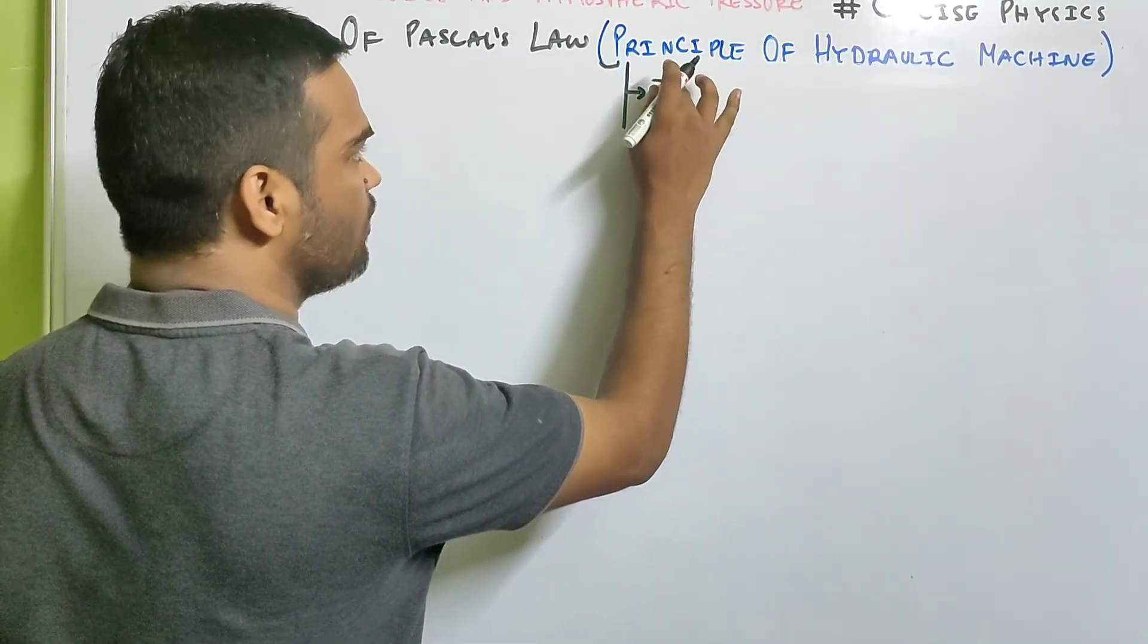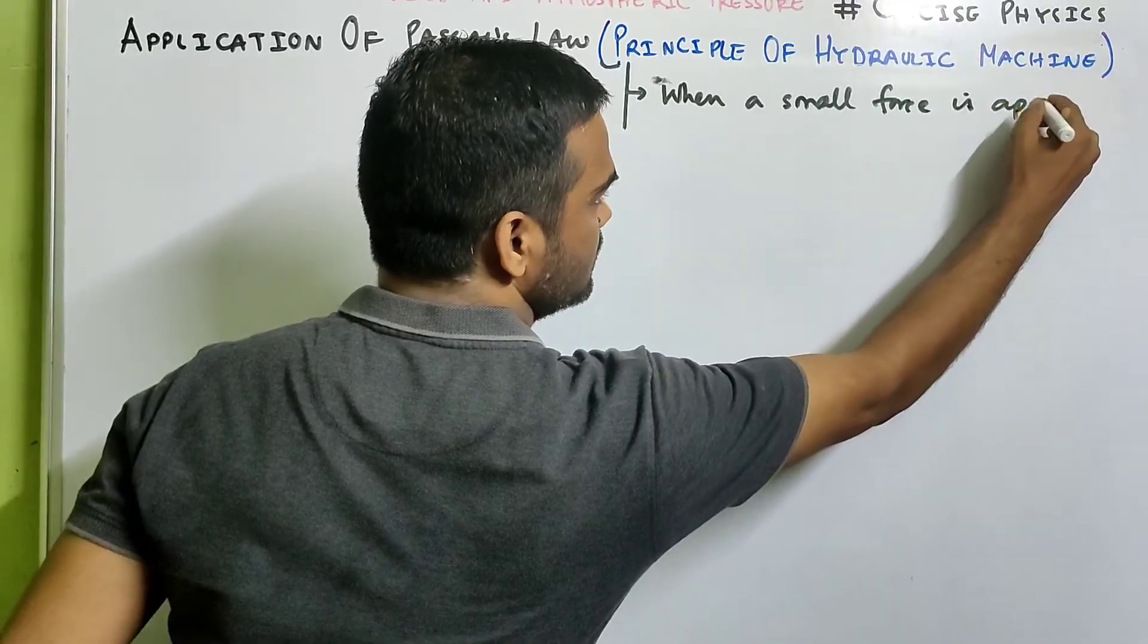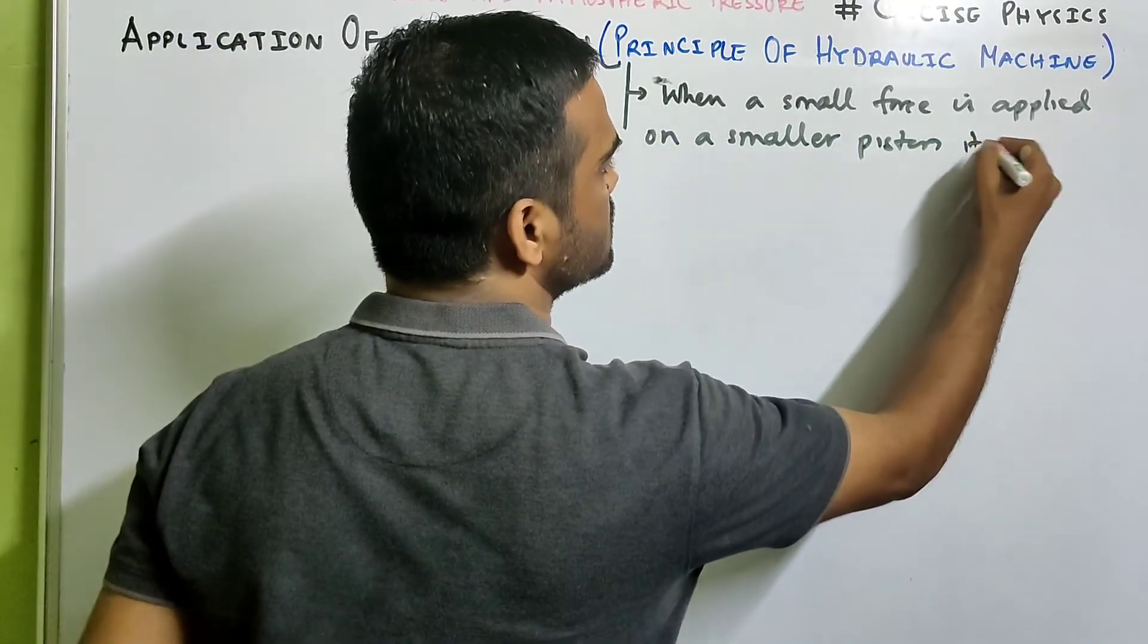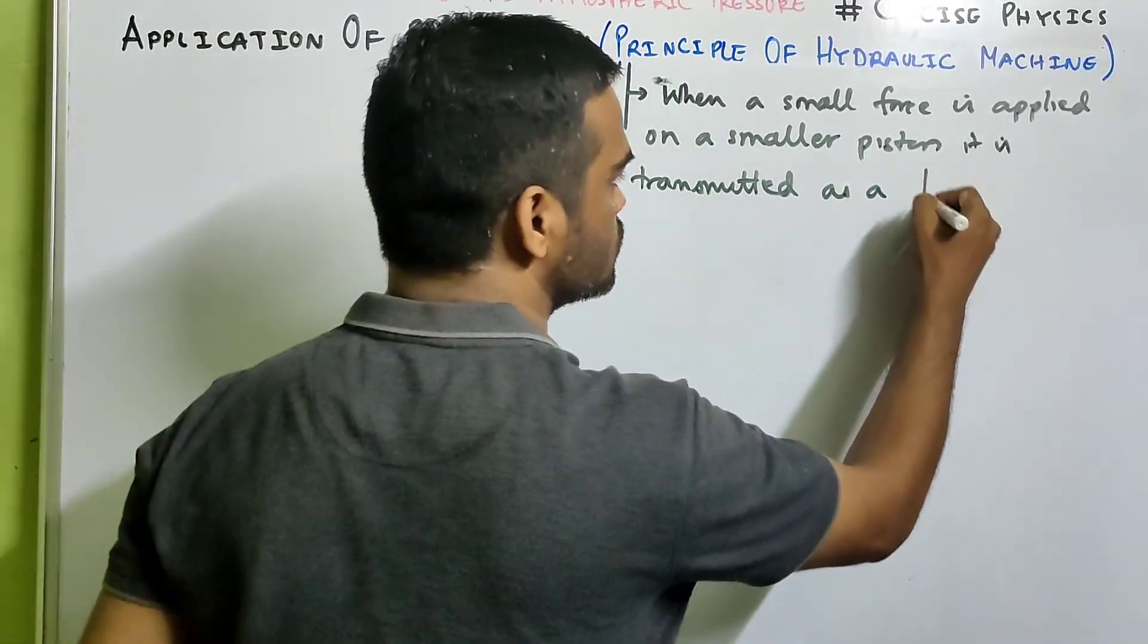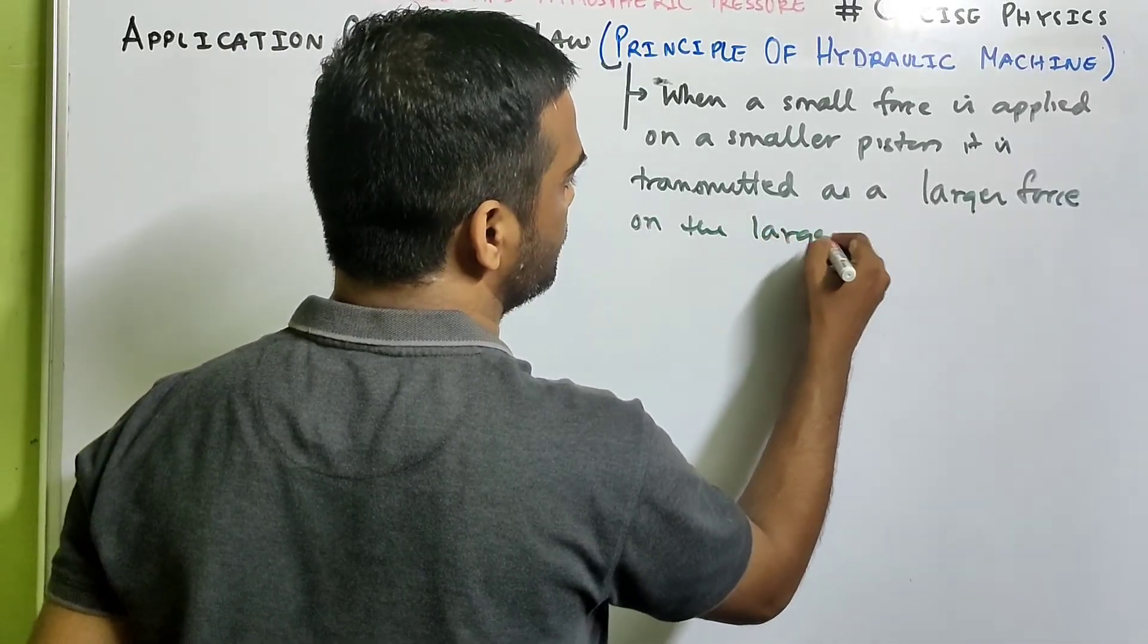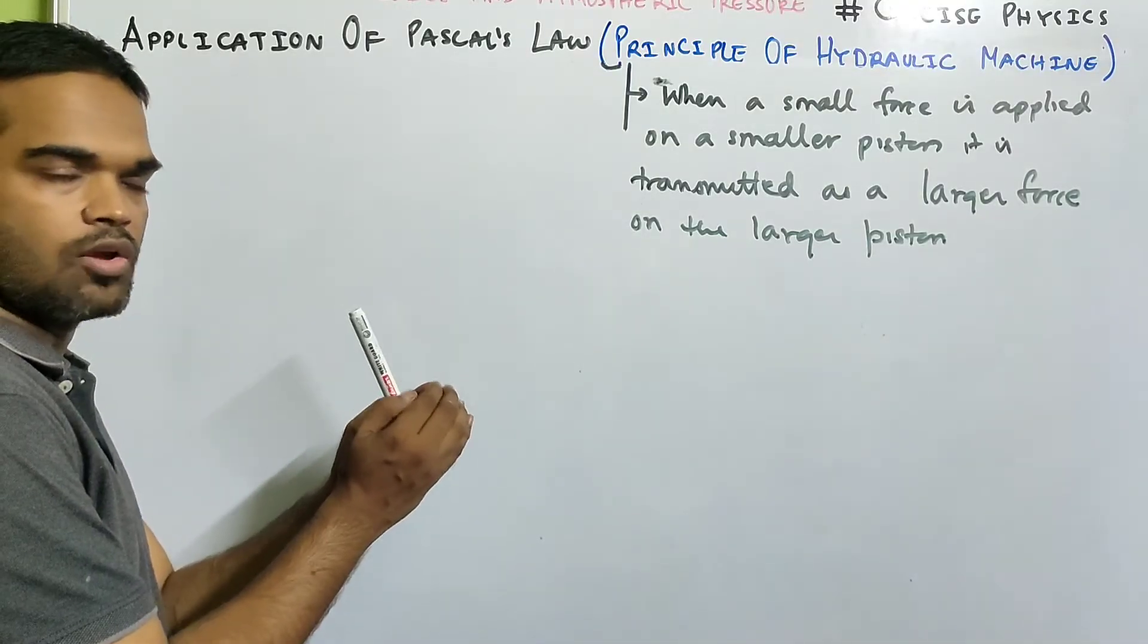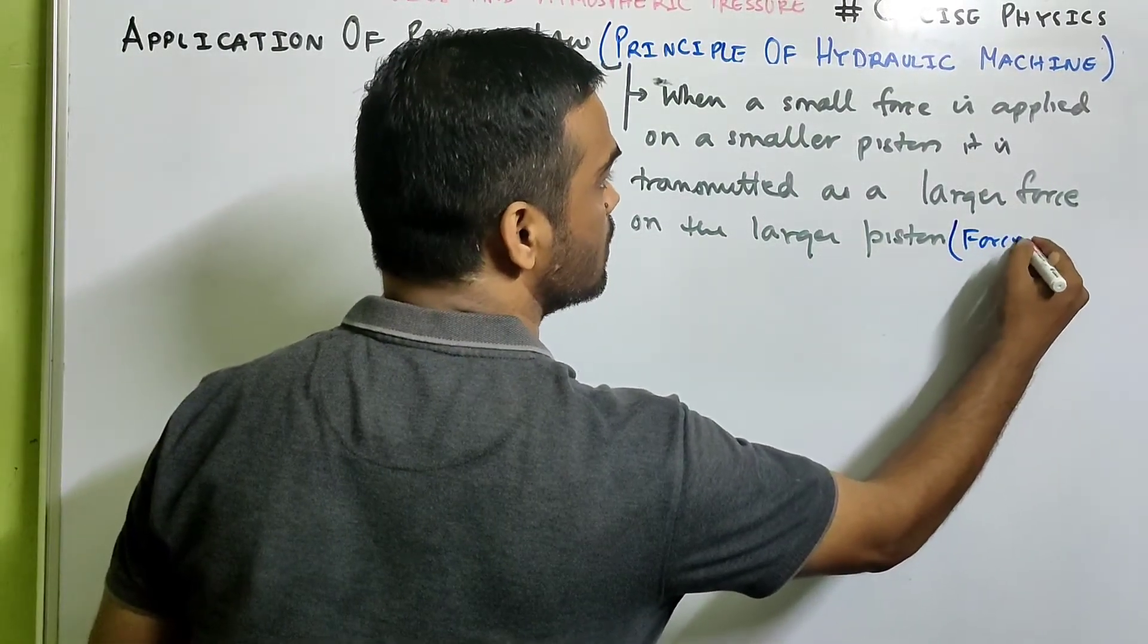When a small force is applied on a smaller piston, it is transmitted as a larger force on the larger piston, bigger piston, which means hydraulic machine what it is doing it is multiplying the force, a small force but resultant which means it acts as a force multiplier.